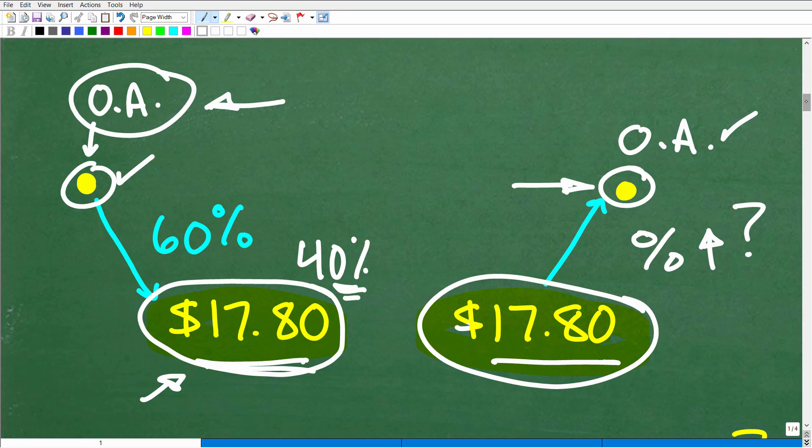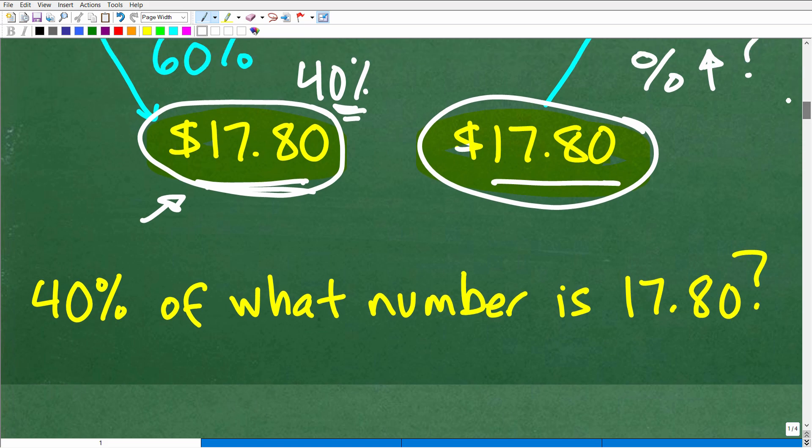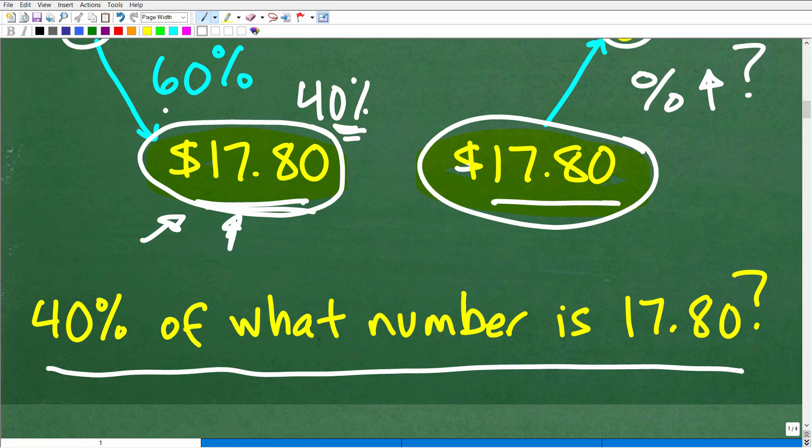What we want to do is distill this into a new problem. To find that original amount, this is the question you want to answer: 40% of what number is $17.80? Because that's what $17.80 represents. It's 40% of the original stock price because the original stock price fell 60%. The next step is, can you solve these percent problems?